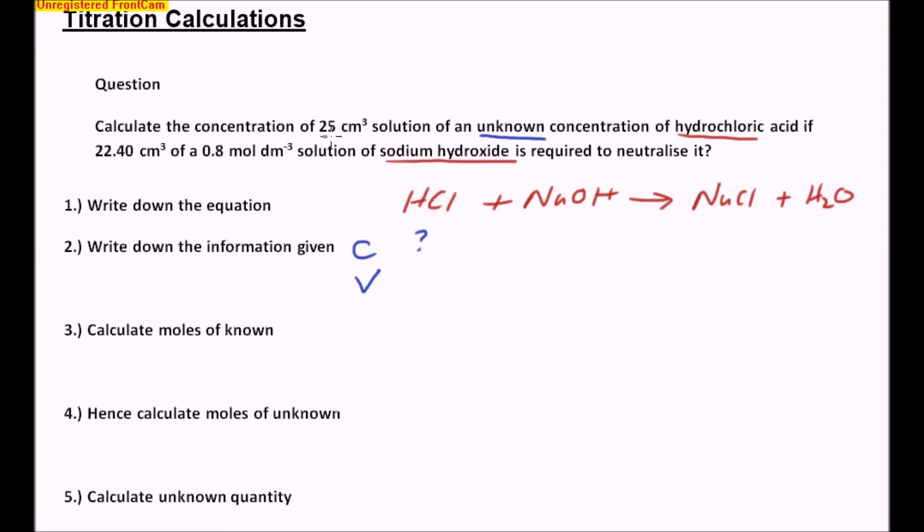but the volume is given to me, I'm using 25 centimeters cubed, so I can write that down next to HCl, so 25.0 centimeters cubed. I now look at the sodium hydroxide, and I know that I've got 0.8 moles per decimeter cubed solution of sodium hydroxide, and I also know that I'm using a 22.40 centimeters cubed solution of it.